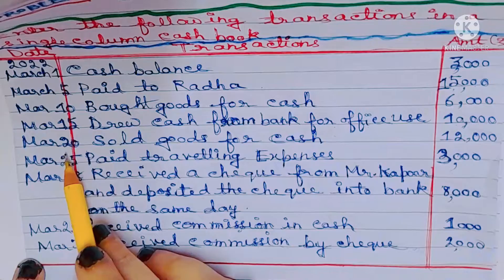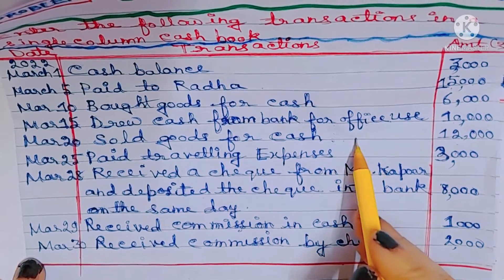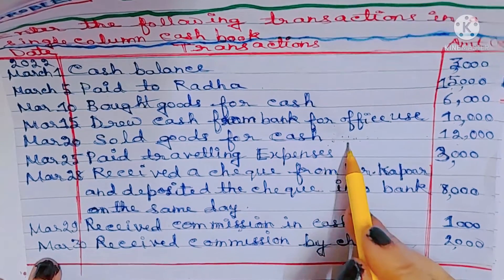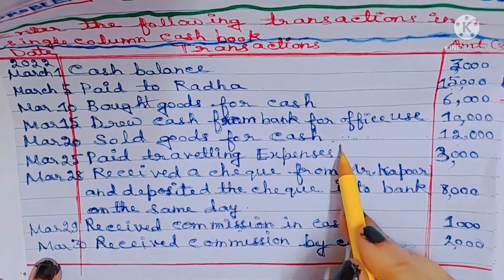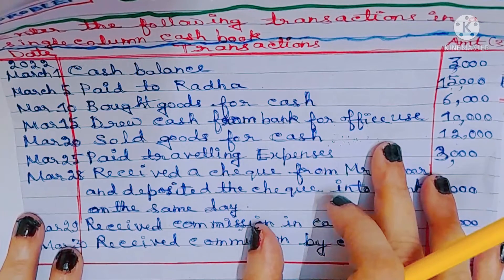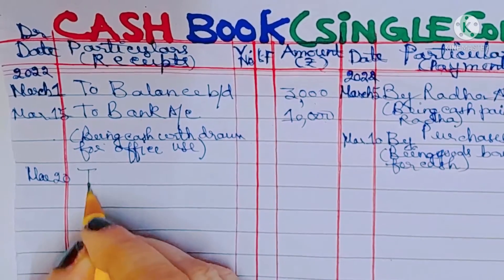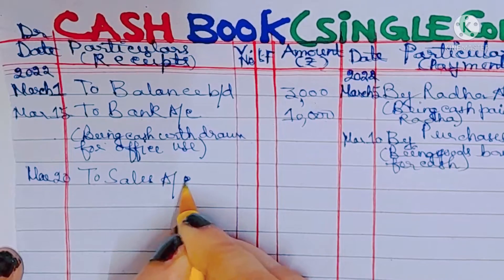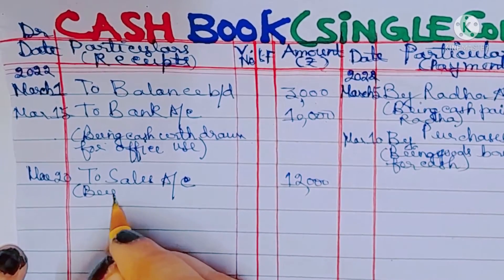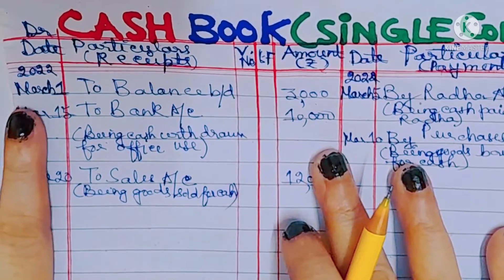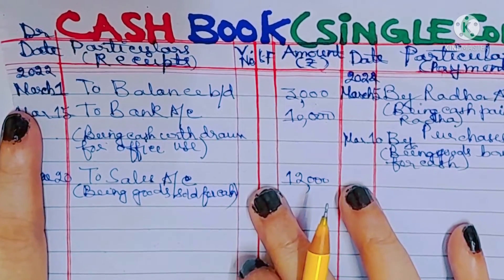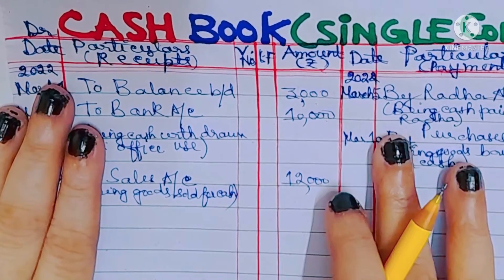The next transaction is on 20th March: sold goods for cash, 12,000. The journal entry will be cash account debit to sales account 12,000. Since cash account is on the debit side, sales account will also be on the debit side. We will write 'To Sales account' in the cash book on the debit side. Date: 20th March, amount: 12,000. Narration: being goods sold for cash. According to the real account rule, what comes in is debit — when goods are sold, cash comes into the business, so 12,000 will be debited.